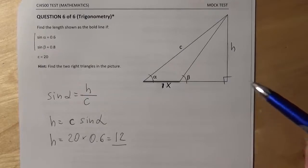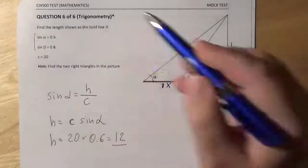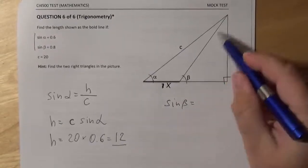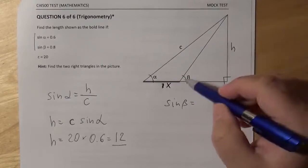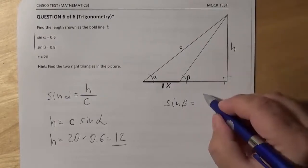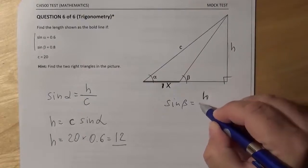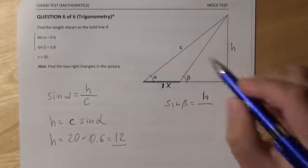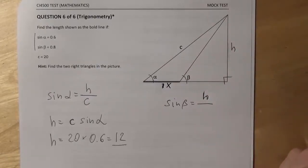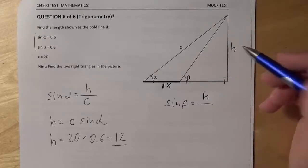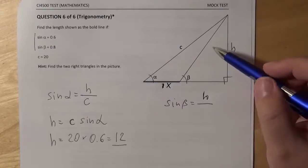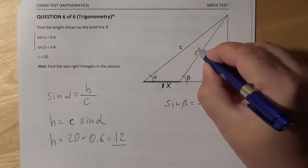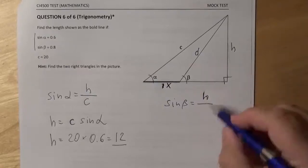Let's have a look what the second sine value that we have here can give us. Sine beta. Beta is a part of the smaller triangle here, beta. Sine beta is H divided by, wow, this hypotenuse, the hypotenuse of the smaller triangle. It's unnamed yet, and of course it's also unknown. If the bigger hypotenuse was C, let's call this one D. So sine beta is H over D.